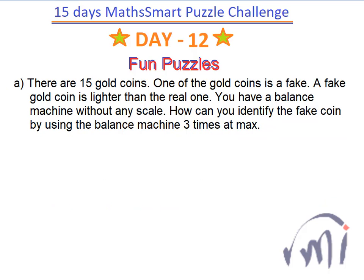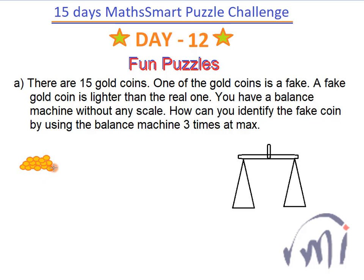We have 15 gold coins total and a balance machine. Out of these 15 coins, one is a fake gold coin — it is lighter than the real ones. We need to identify which coin is the fake coin, and we can use the balance machine a maximum of three times.